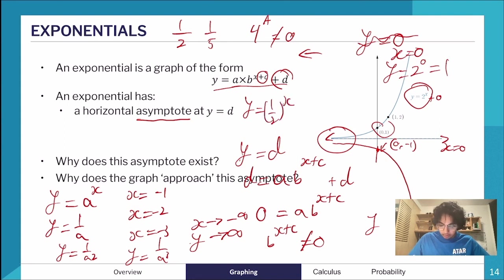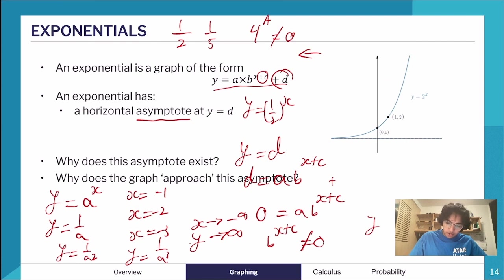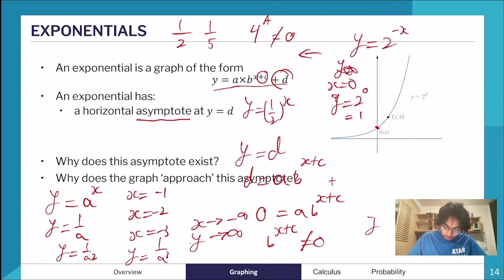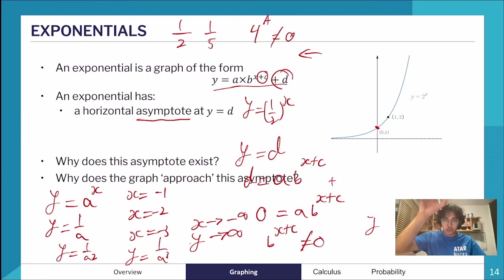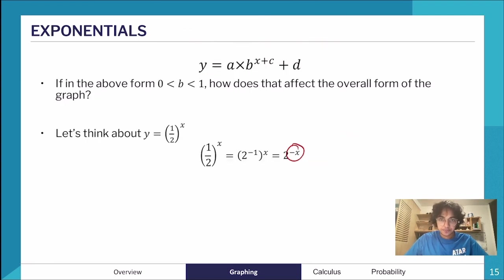A quick correction: for y = (1/2)^x = 2^(−x), the y-intercept is still (0, 1) since 2^0 = 1. When b is less than 1, the graph doesn't flip from top to bottom — it flips left to right, reflecting in the y-axis. So the graph increases to the left of the y-axis rather than the right.